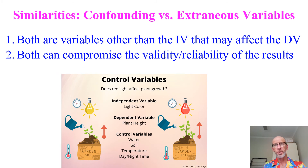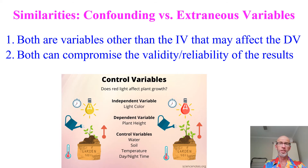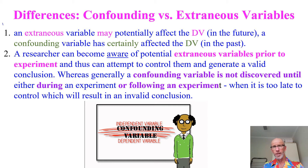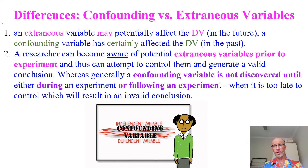In terms of similarities between confounding variables and extraneous variables, both are variables other than the independent variable that can affect the DV, and both, if not controlled, can diminish the validity and reliability of our data and conclusions. The key difference is tense: an extraneous variable is something we anticipate may affect the DV in the future, meaning we have the potential to control it and generate more valid, reliable data. A confounding variable, on the other hand, has already affected the DV — it's too late. We've figured it out after gathering our data, we can't draw a valid conclusion, and we almost need to start the experiment again.